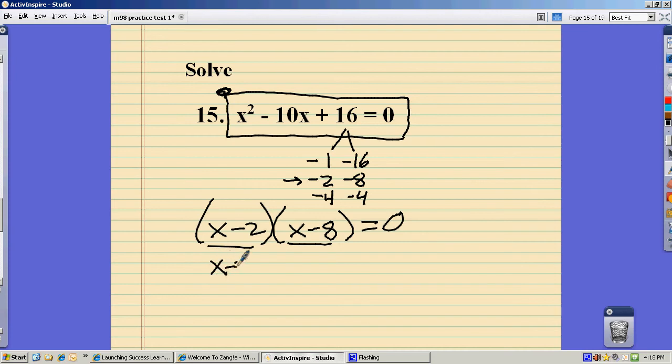That means either this is 0, using that zero product property, or this is 0. And if I solve both those equations, pretty straightforward, add 2, add 8, x could equal 2, it could equal 8.